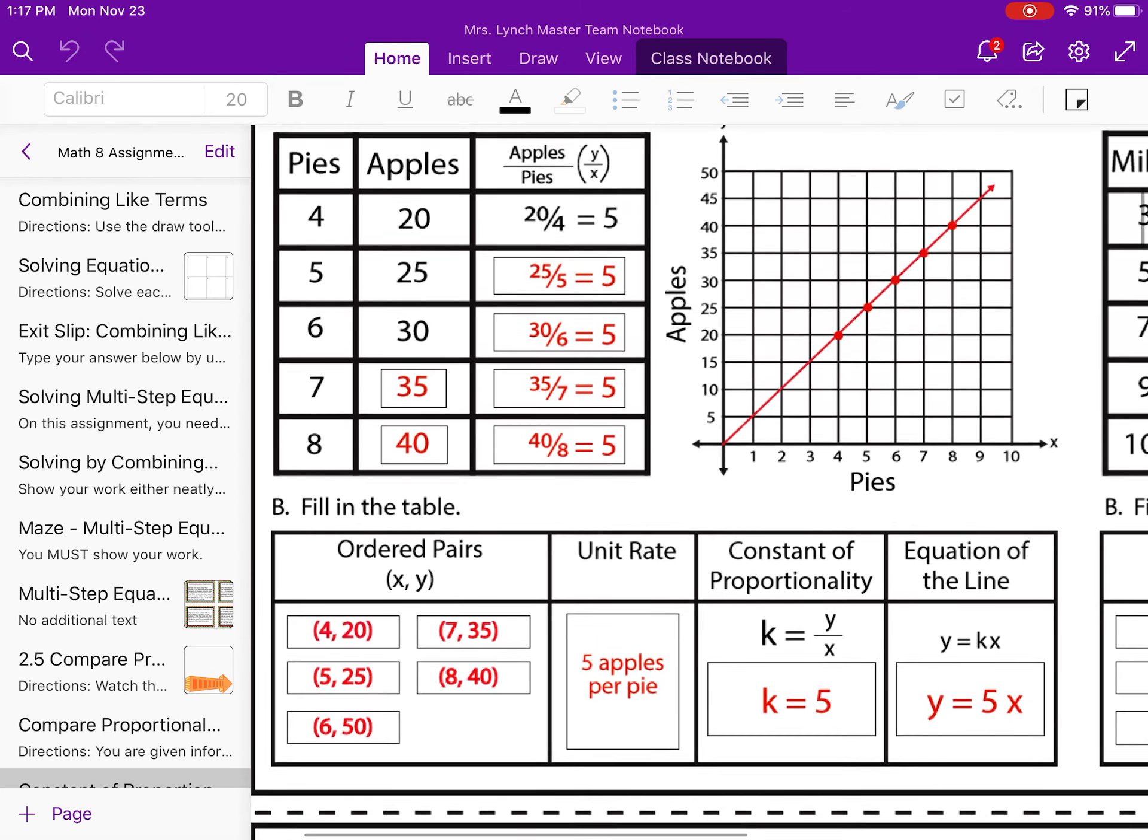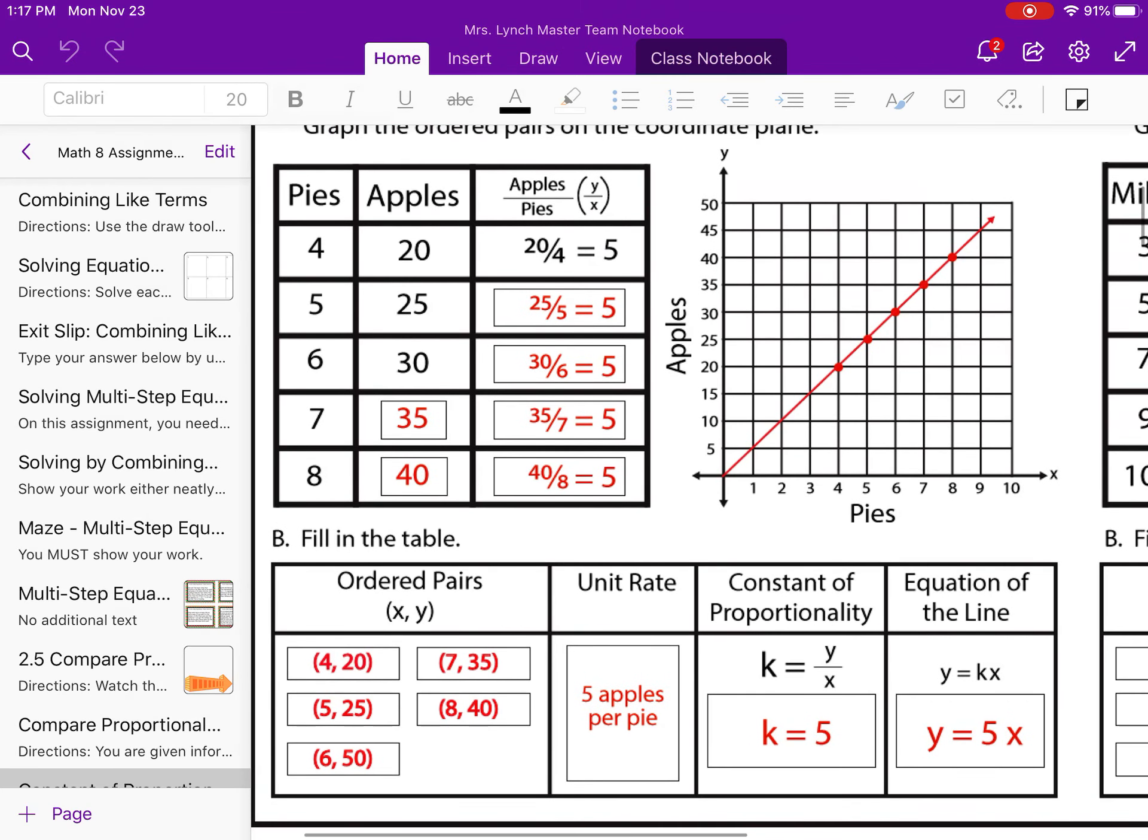The other thing that might be maybe a little bit newer for you is the ordered pairs. I always compare this to the game Battleship. If you played Battleship before, you are saying like E4, C5, something like that. Those are coordinates. Those are locations on a map, or in this case, we're talking about graphs. So that's all an ordered pair is.